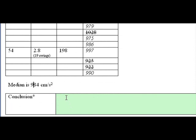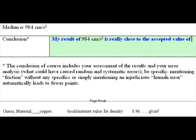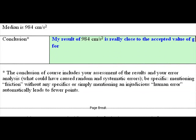So here I'm going to use these data and I'm going to say the following: My result of 984 centimeters per second squared is really close to the accepted value of g equals 982 centimeters per second squared for Alaska. In fact, within 0.2 percent. You can do that calculation on the side and you would see that's indeed that close.